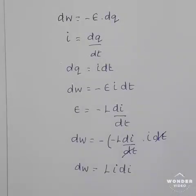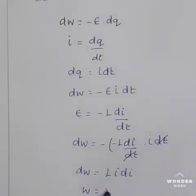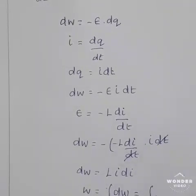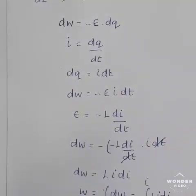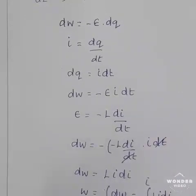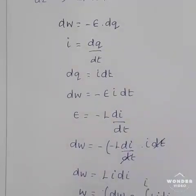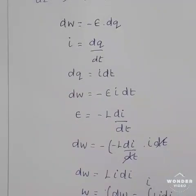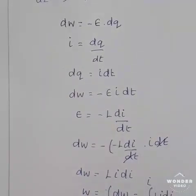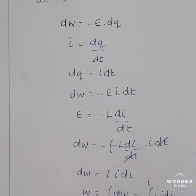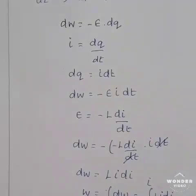This is the small amount of work done. To find the total work done, we integrate the above equation. Total work W = ∫dW = ∫₀ᴵ L·I·dI. Using the integration formula ∫xⁿdx = xⁿ⁺¹/(n+1), therefore W = L·I²/2, evaluated from 0 to I. Applying the upper limit, W = L·I²/2 − 0, therefore work done W = ½LI².